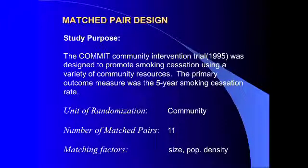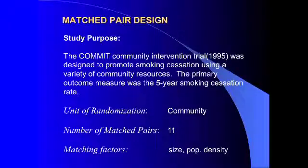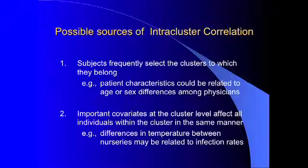Another classic example is the COMMIT study. One feature of the vitamin A study is its large scale — 450 villages randomized — which is highly unusual, as most cluster randomization trials are much smaller. The COMMIT community intervention trial was designed to promote smoking cessation using a variety of community resources, and involved 11 matched pairs of communities. Because of the smaller effective sample size in cluster randomization trials, investigators are often tempted to use pair matching to increase efficiency, with matching factors including size, population density, and other demographic variables. However, this trial, like many community intervention trials, was not successful in demonstrating a clinically significant primary endpoint.